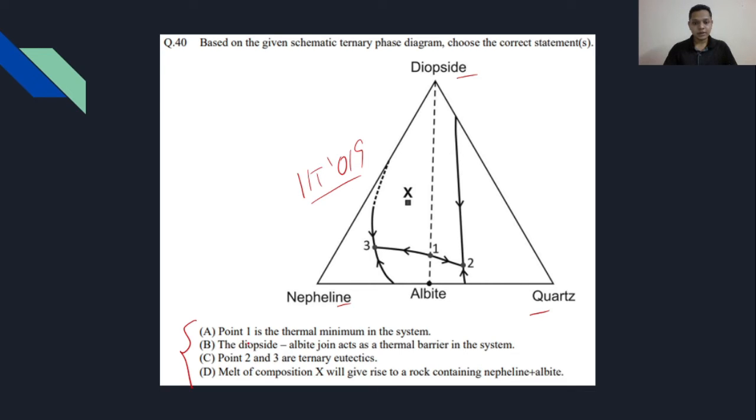The first statement says that point 1 is the thermal minimum in the system. Point 1 lies on this albite-diopside line. If I can see this point 1 and these two arrows, these lines are representing cotactic curves. If you have studied phase diagrams, you will understand that cotactic curves are those curves which generally join the binary eutectics to the ternary eutectic.